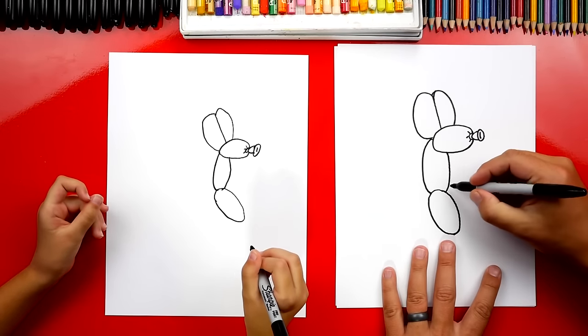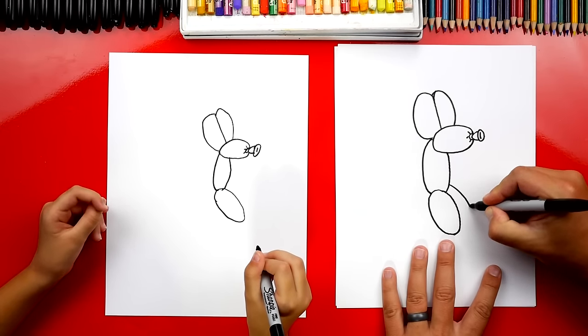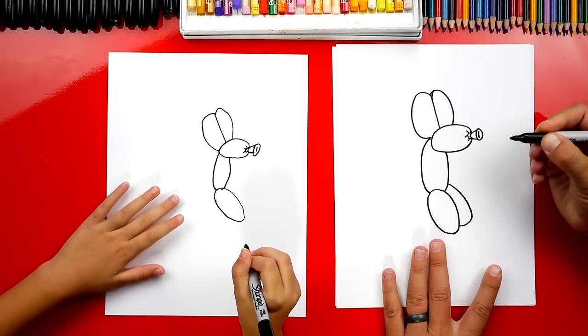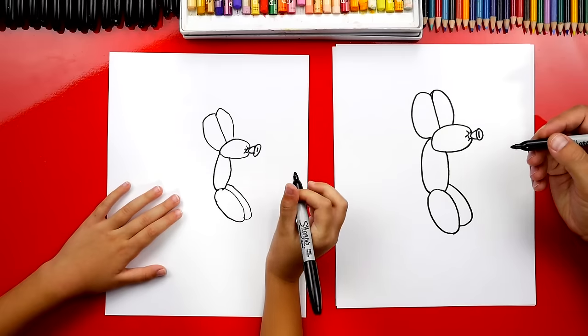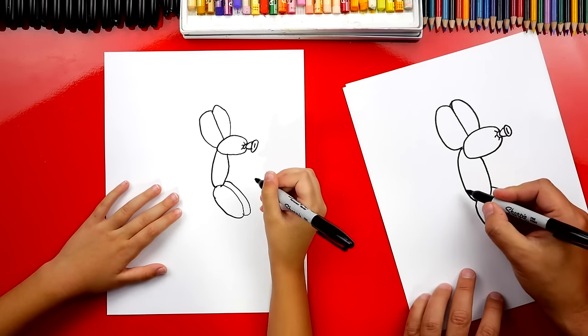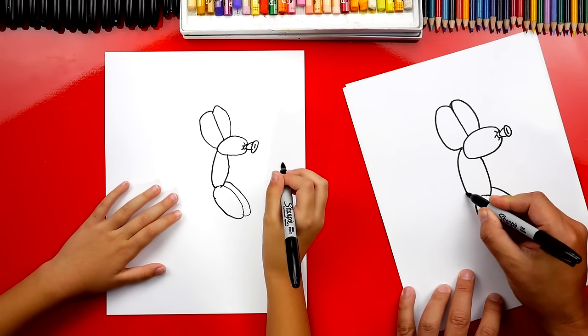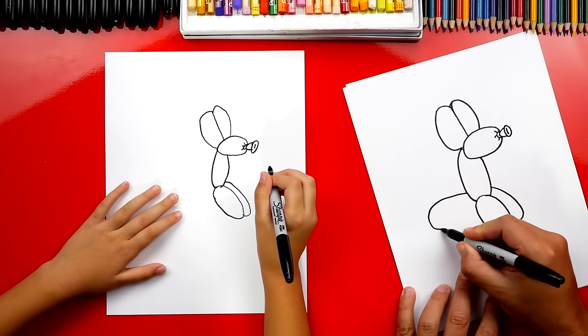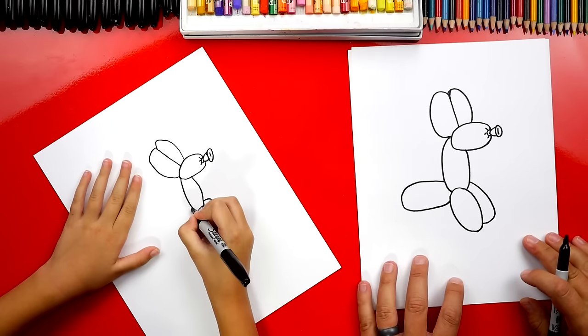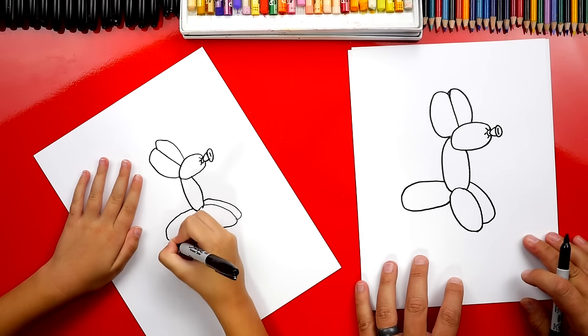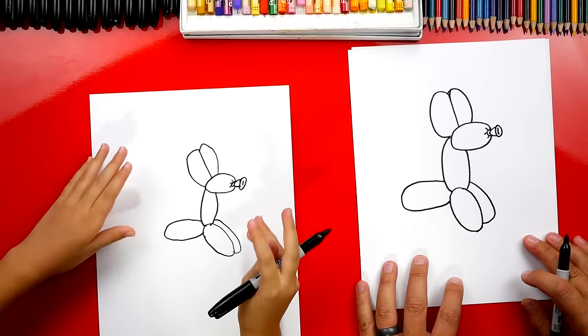Now let's draw his other front leg. We're going to draw another curve that comes out like this, around and then back in. Now let's draw his body. We're going to start right here and we're going to draw another oval that comes back like this and then back in. He's looking so awesome. This is maybe my new favorite lesson. Yeah, me too.